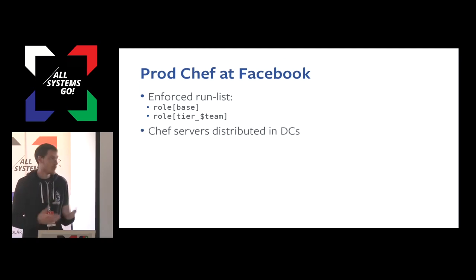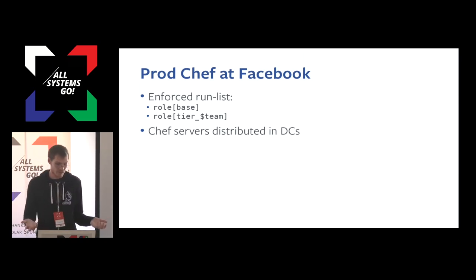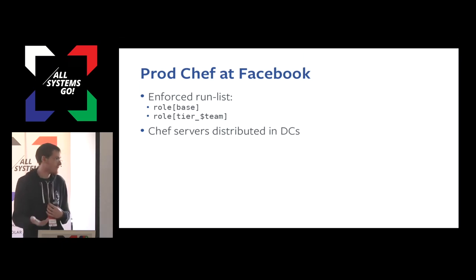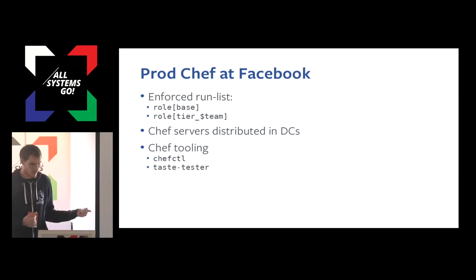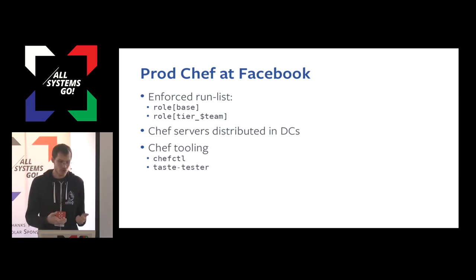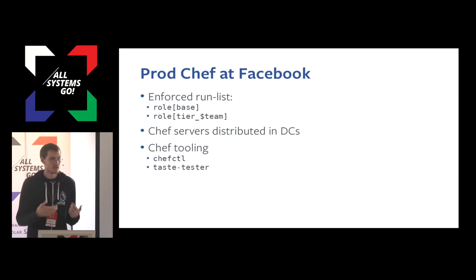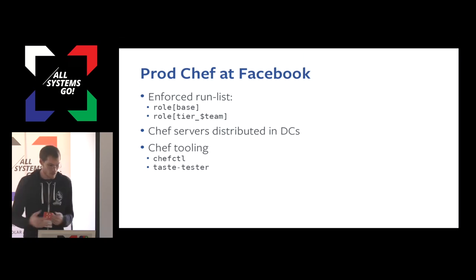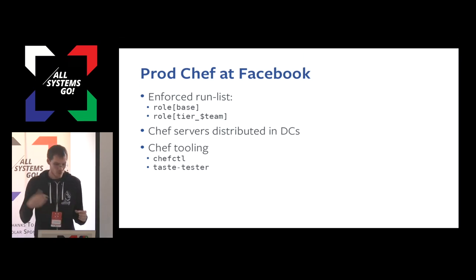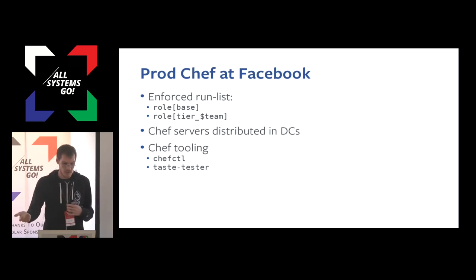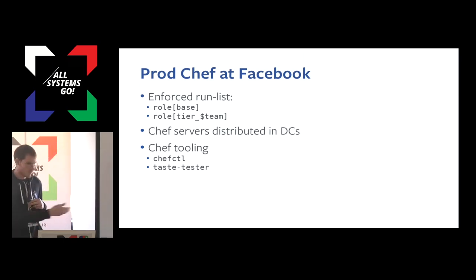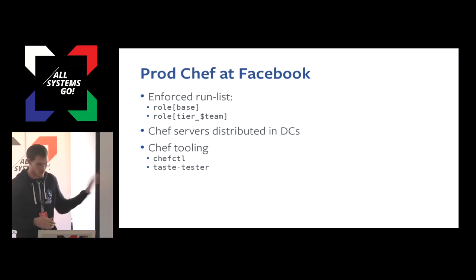We have Chef servers distributed throughout our data centers. There's a DNS service discovery mechanism that allows any machine in our fleet to look up what the nearby Chef server is and run Chef using that server. We have a bunch of tooling around this. ChefCuddle and TasteTester are particularly important for this talk. ChefCuddle is a script that will run Chef, babysit the Chef process to make sure it runs successfully, and then make sure that the output of that Chef run — both the exit code and the logs — go someplace useful. TasteTester is a tool for testing Chef changes that will spin up a development Chef server, push your changes to it, and then you can configure a production host to use that development server rather than one of the production servers. Both of these are open source.